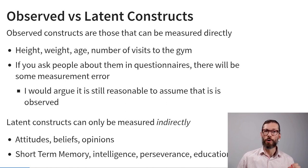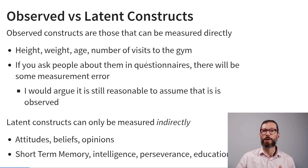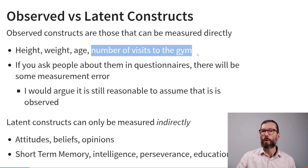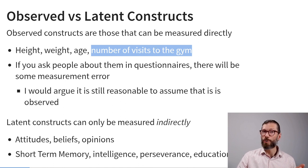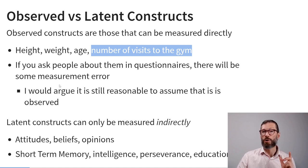These are all observable constructs. If we ask people about them in questionnaires, there might be slight measurement error — for example, someone may misremember how often they visited the gym. But by and large, it is reasonable to assume this type of variable is observed with negligible measurement error.